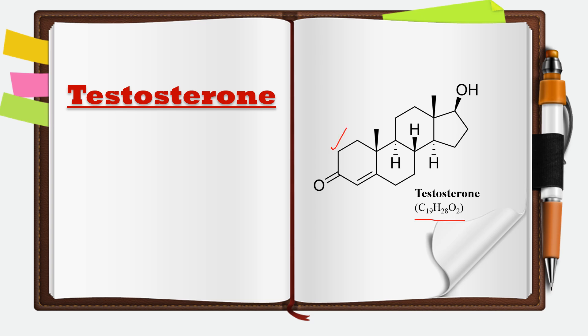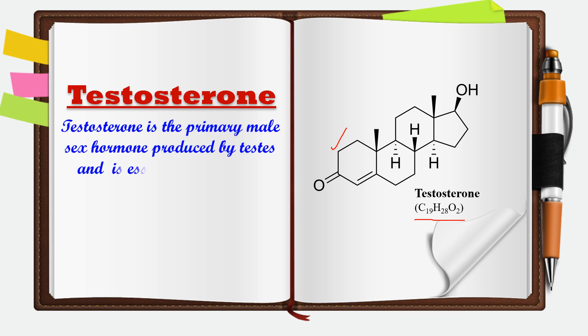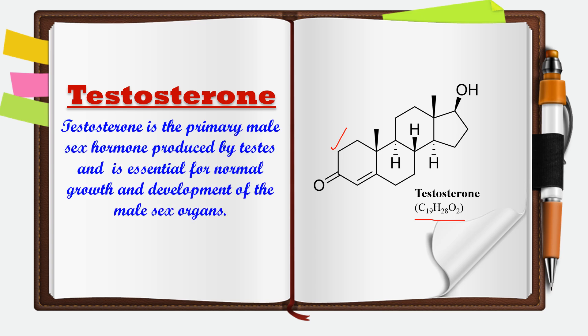Next is testosterone. This is the structure of testosterone having molecular formula C19H28O2. It has 19 carbon atoms and is secreted by the testes in males. It is responsible for the normal growth and development of the male sex organs and secondary sexual characteristics.